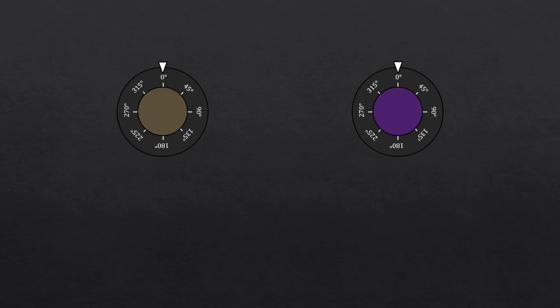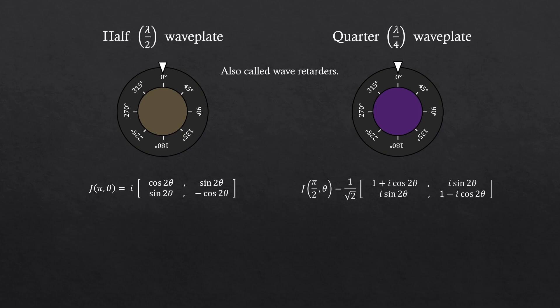So let's recall, we had these two waveplates, also called wave retarders, and I briefly showed these two expressions for the waveplates at the end of the previous video. 2π is a full wave, right? So that's why we have π here, which means a half wave, and π over 2 here, which means a quarter wave.